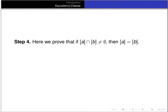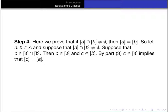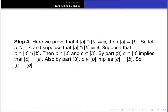For part four, we prove that if the intersection of the equivalence classes of A and B is non-empty, then the equivalence class of A equals the equivalence class of B. Since the intersection is non-empty, there's some element C in both equivalence classes. By part 3, C in the equivalence class of A implies the equivalence class of C equals the equivalence class of A. And C in the equivalence class of B implies the equivalence class of C equals the equivalence class of B. By transitivity of equality, the equivalence class of A equals the equivalence class of B. That completes the proof.